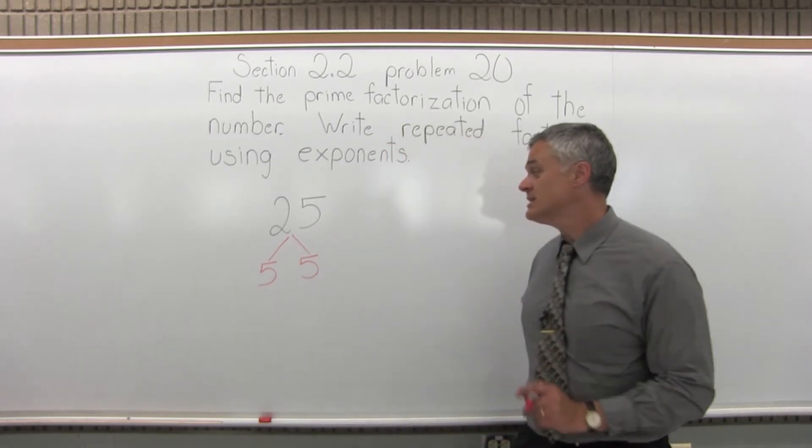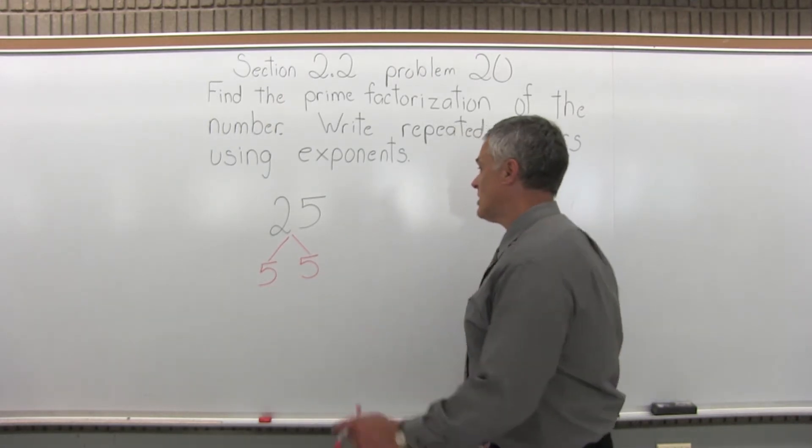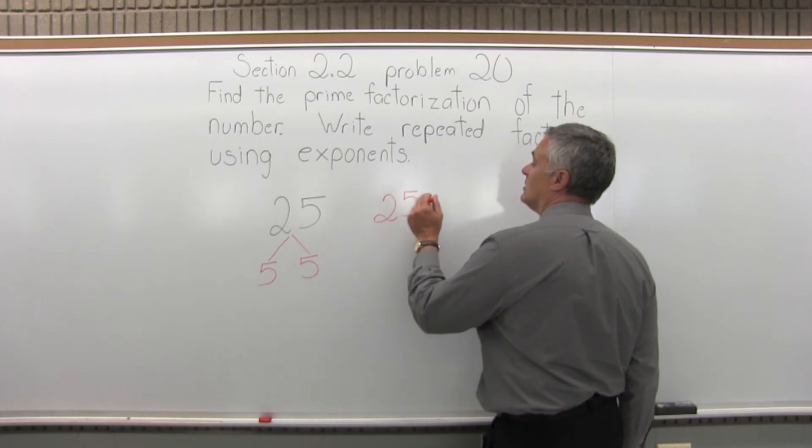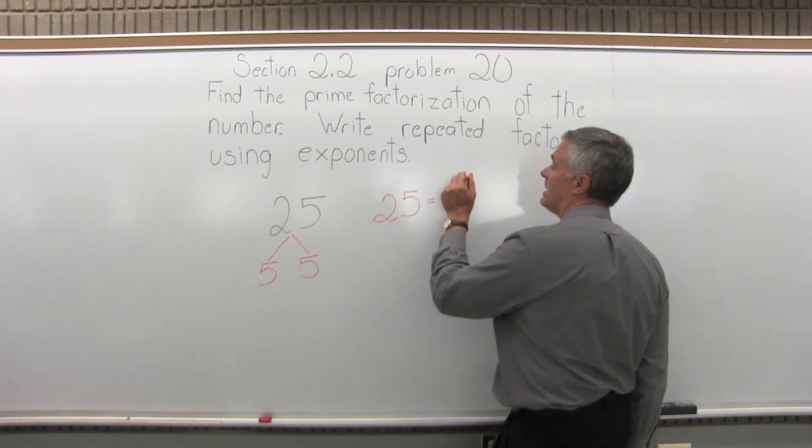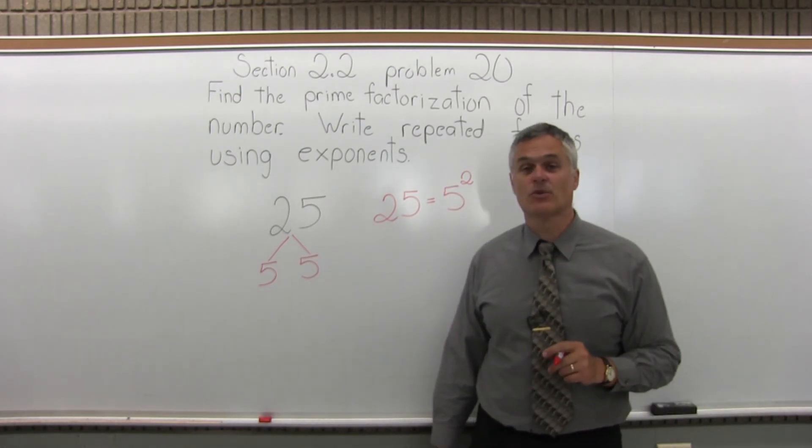And now in this case, actually both these numbers are prime. That's as far as it splits up, you can't go any further. So we write 25 equals, now 5 is a repeated prime, so there's two of them. I will write 5 to the second power. Those are the primes that multiply to make a 25.